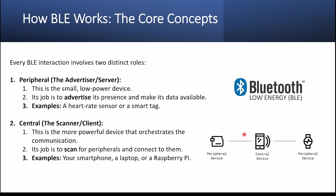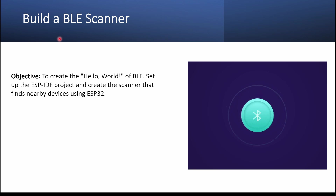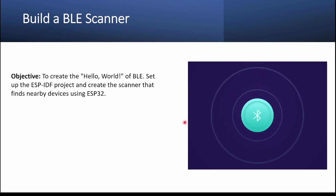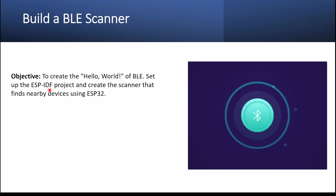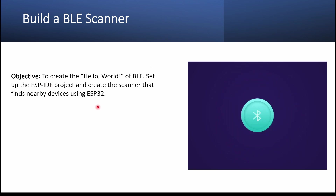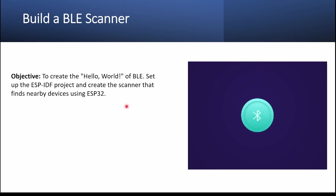The central device scans peripherals and connects to them to get information. For example, a smartwatch connecting to your mobile phone — the smartwatch is the peripheral and the mobile phone is the central device. In this tutorial, we'll be building a BLE scanner using the ESP-IDF framework on ESP32 to find different Bluetooth devices nearby.